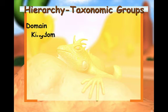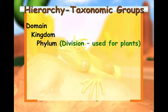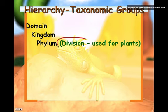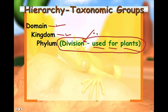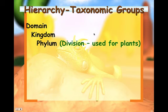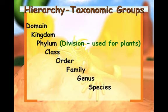Domain is the broadest category, followed by kingdom, then phylum — or division for plants — then class, order, family, genus, and finally species. A mnemonic can help you remember the order. A common one is: 'King Philip Came Over For Good Spaghetti,' representing kingdom, phylum, class, order, family, genus, and species.